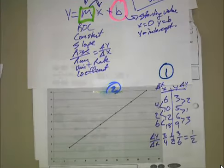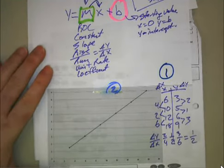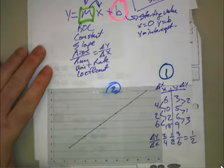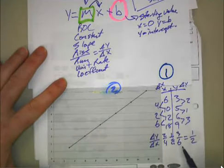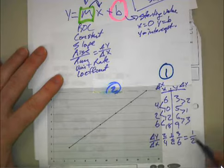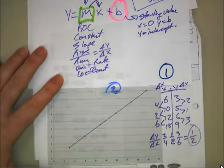So by looking at our delta Y over our delta X, we can verify that the rate of change is constant and identify our slope for the purposes of writing our equation.